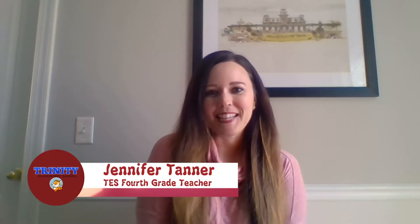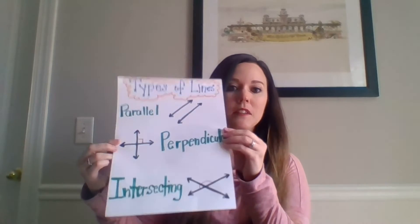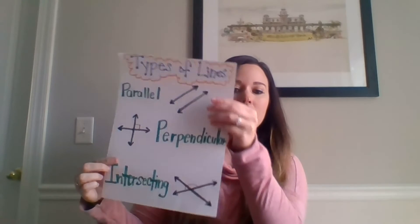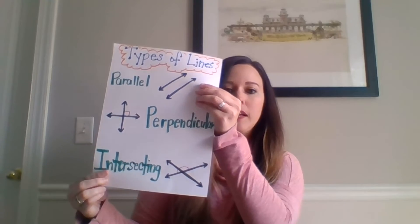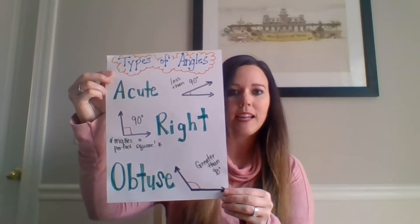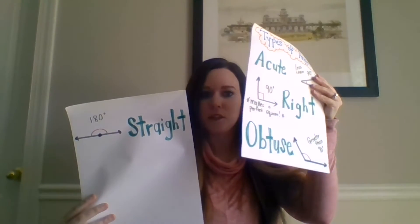Hi Trinity 4th graders, Ms. Tanner here. I've been thinking about all the ways that we can use our geometry vocabulary. Quick review: we have different types of lines — parallel lines go side by side but they never cross; perpendicular lines cross at a point and make a perfect right angle; intersecting lines cross at a point and make obtuse and acute angles. We also have different types of angles: acute is less than 90 degrees, right makes exactly 90 degrees, obtuse is greater than 90 degrees, and a straight angle makes 180 degrees. Here's my challenge for you: go around your house and have a scavenger hunt to find all the things that make these different kinds of angles.